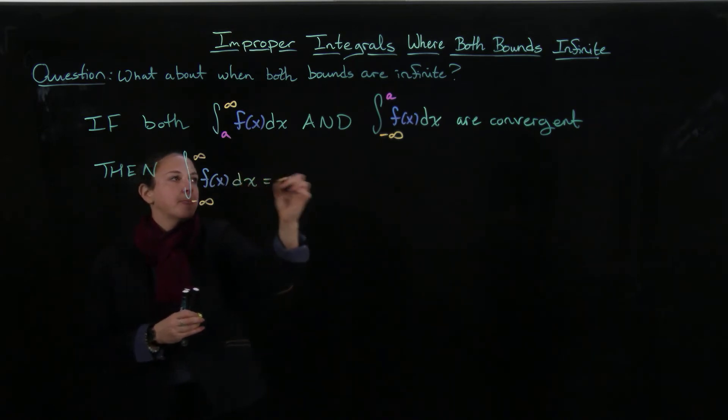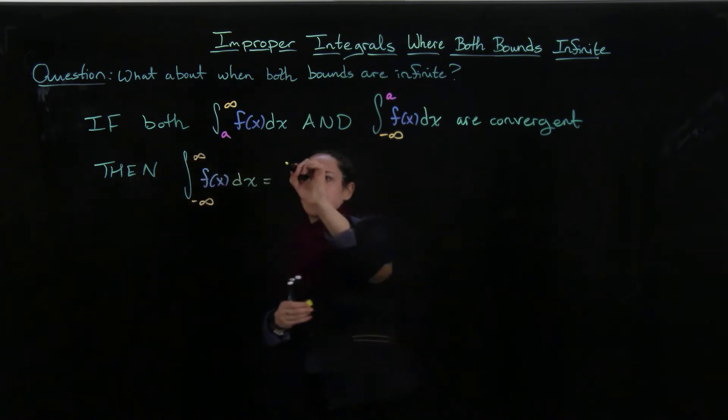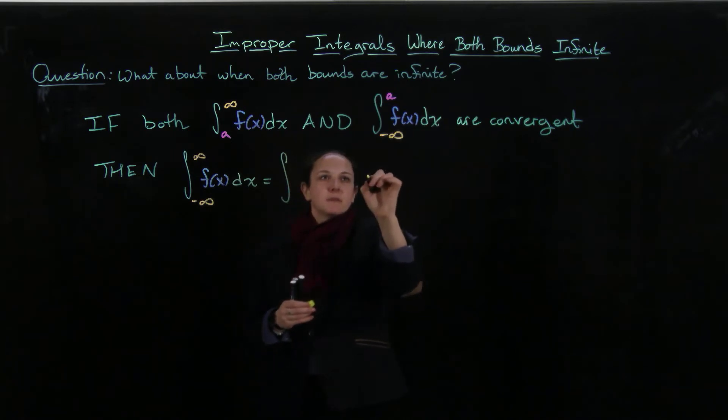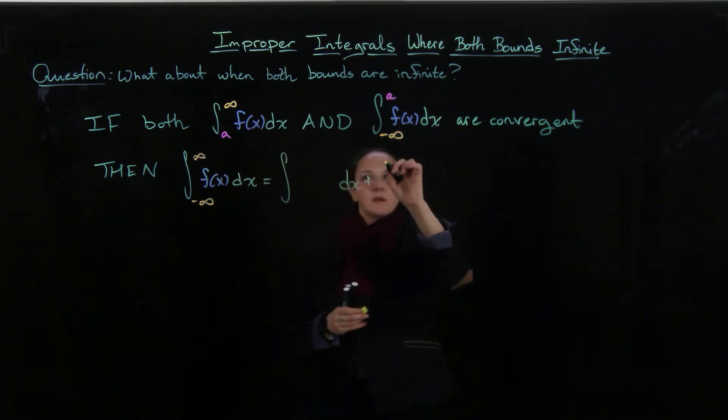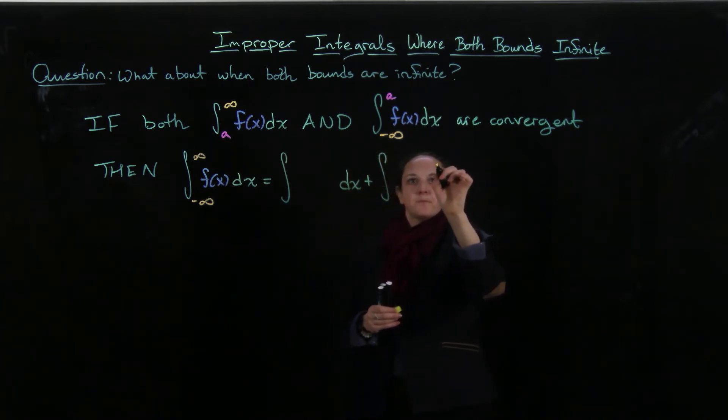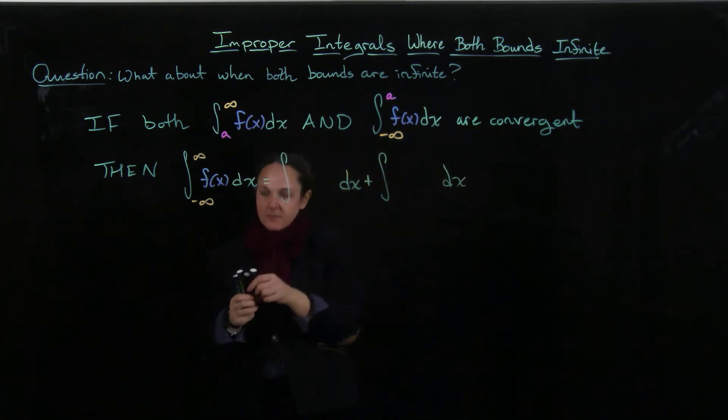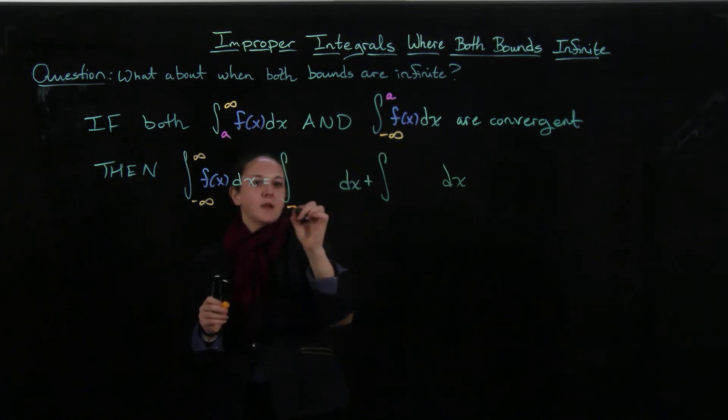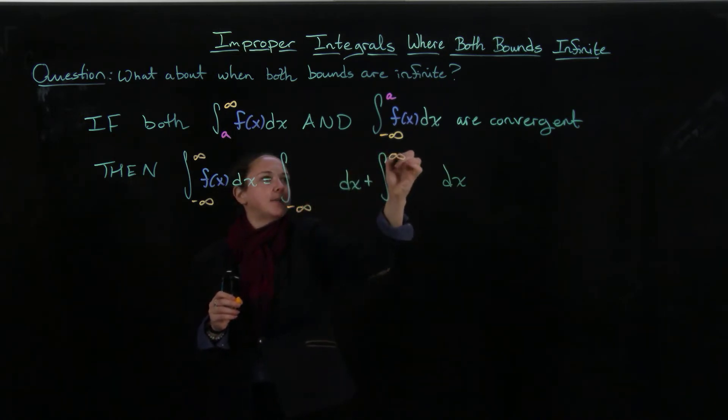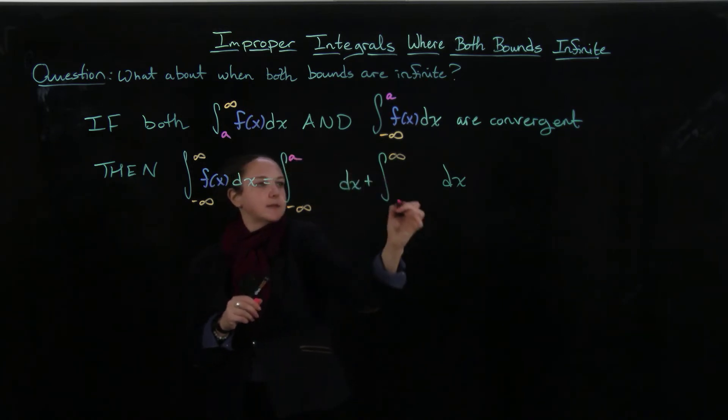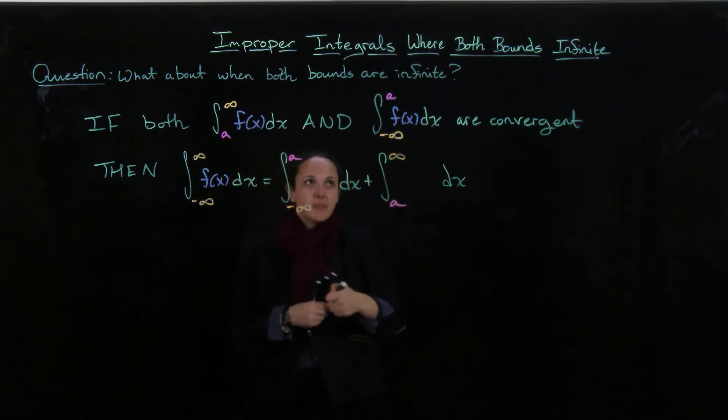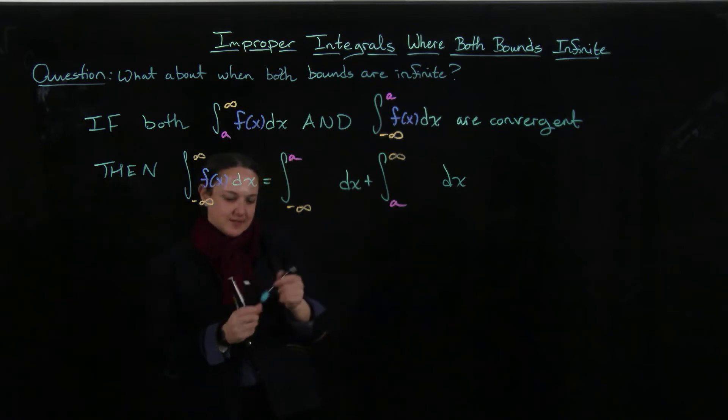Okay, so this is going to equal... So I'm going to start with minus infinity and I'm going to end with infinity, and then these a's are going to match up. This a is going to match up with that a, and then the function is going to be the same for both of them.